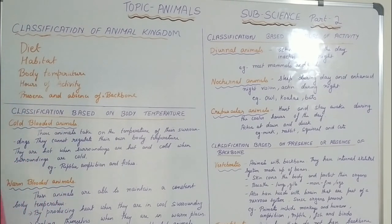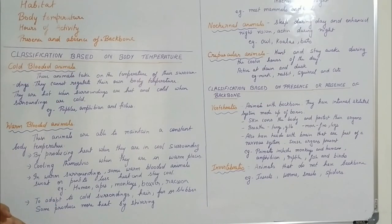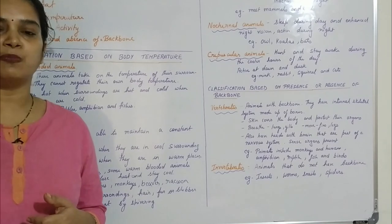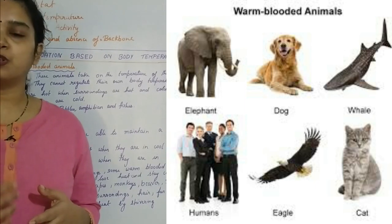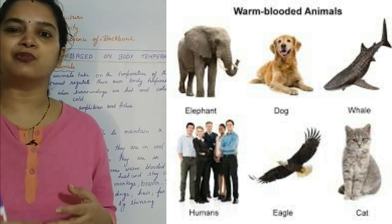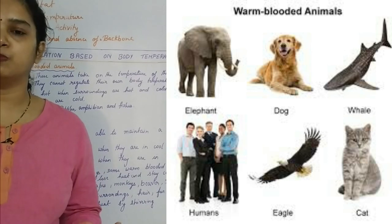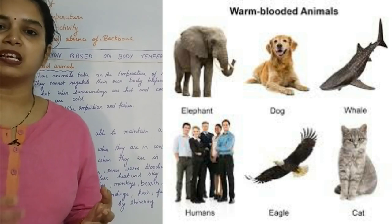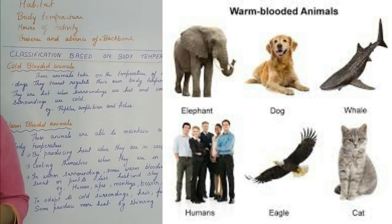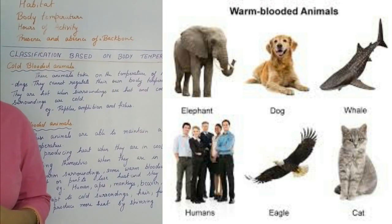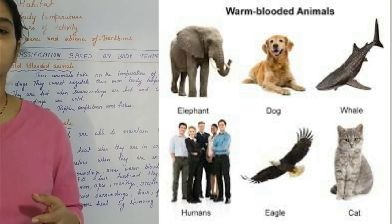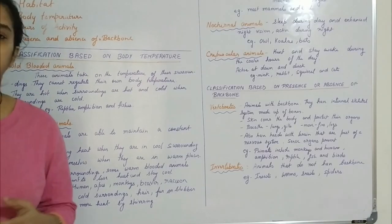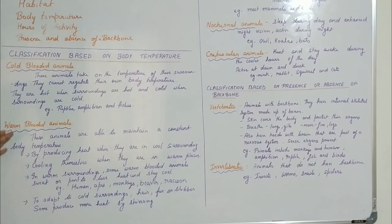In the case of warm-blooded animals, human beings are warm-blooded. During summer, in order to make ourselves cool, we sweat. And in the cold or winter season, we cover ourselves with warm clothes to make ourselves warm. But we don't change according to the temperature of the surroundings. These animals are able to maintain a constant body temperature.